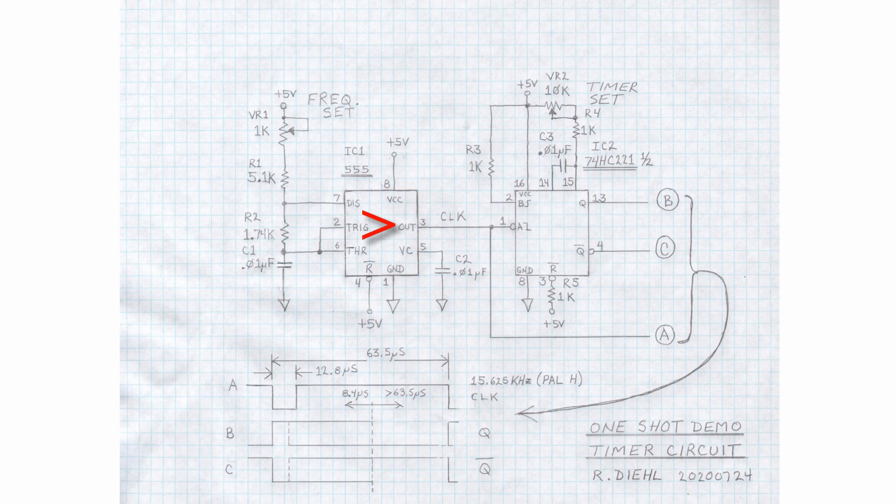Moving on, we have our output pin, which I've labeled CLK, which stands for clock. If you look at the bottom of the diagram, you see a timing trace of the device labeled A. That is the clock output of the 555 timer. It is low for 12.8 microseconds and has a complete period from falling edge to falling edge of 63.5 microseconds, give or take a few nanoseconds. But it is a frequency of 15,625 cycles per second. The European standard definition television scan rate, horizontal scan rate.